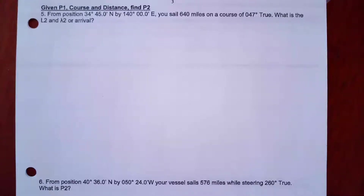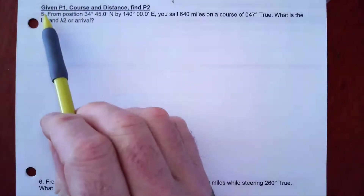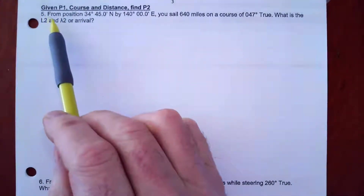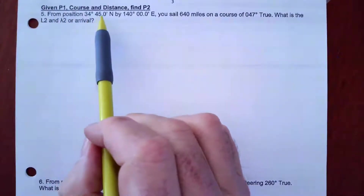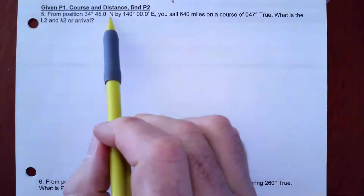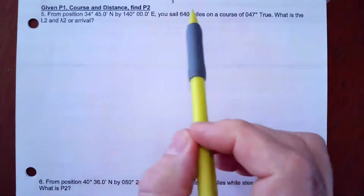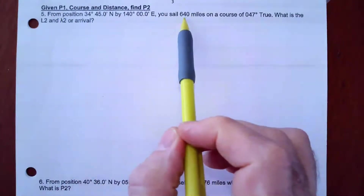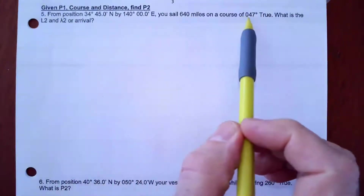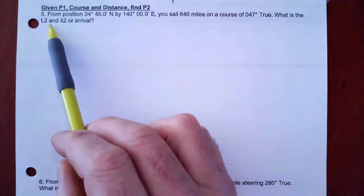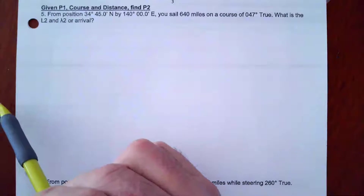In this video, we're going to do the other kind of mid-latitude problem. This is problem five from your worksheets. We're going from position one, 34°45'N, 140°E, and we're going to go about 640 miles on a course of 047° to the northeast. The question is: what is the latitude and longitude of the point of arrival?